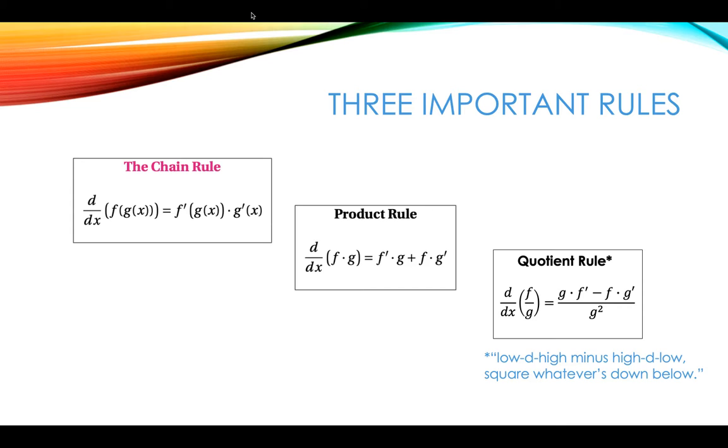Now an instructor I had in college actually taught us a little way to remember this and I remember it to this day. Low d high minus high d low, square whatever is down below. So low times the derivative of the higher function minus the higher function times the derivative of the lower function, and then you square whatever the lower function is.